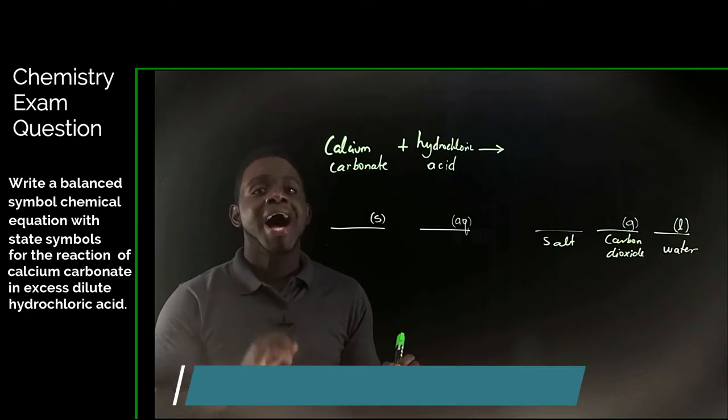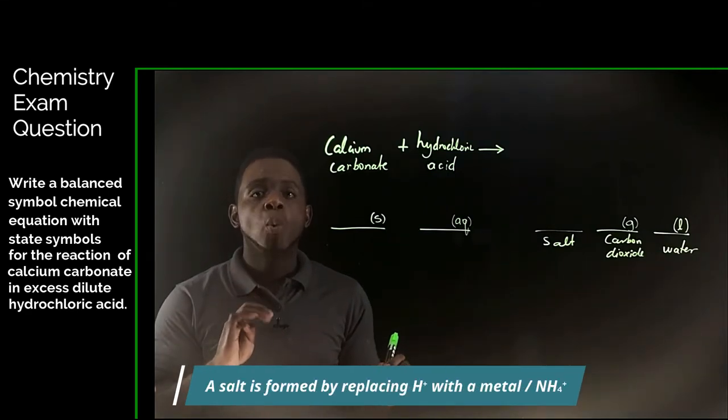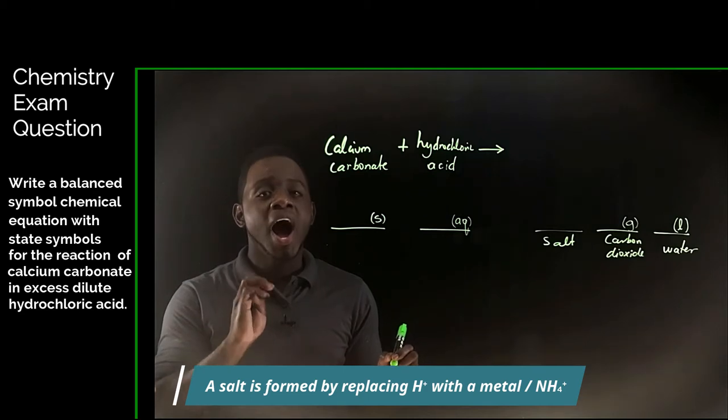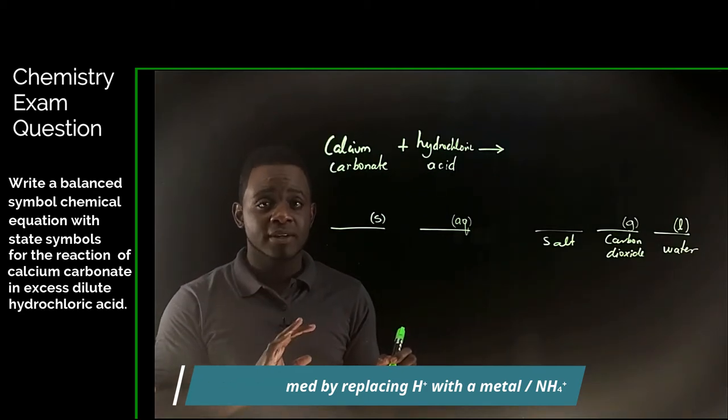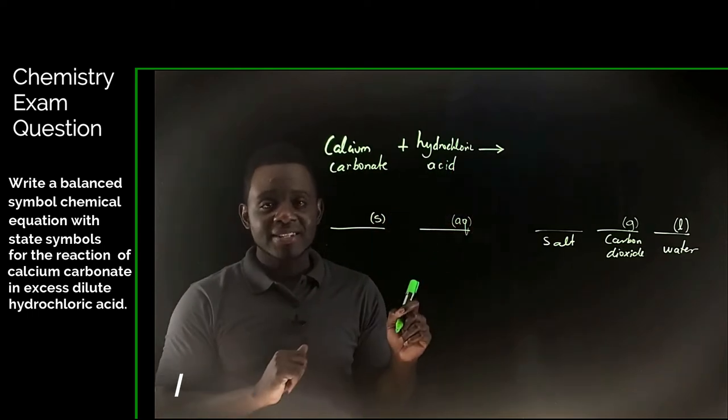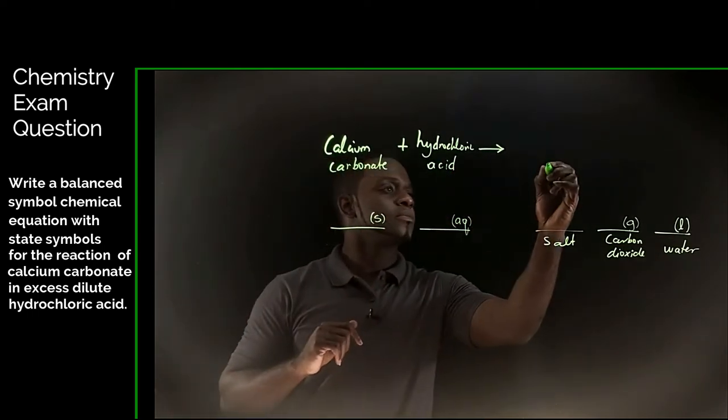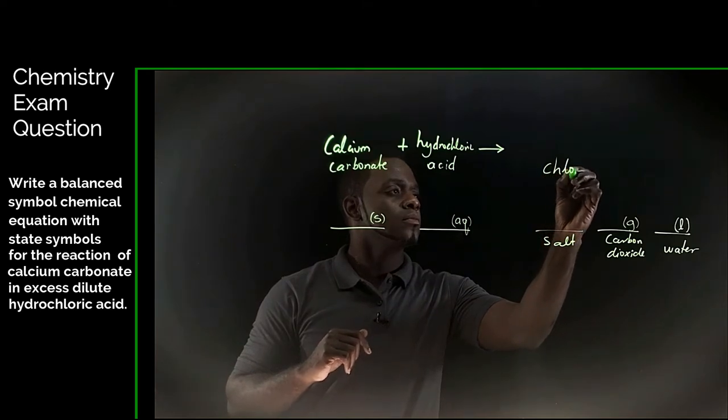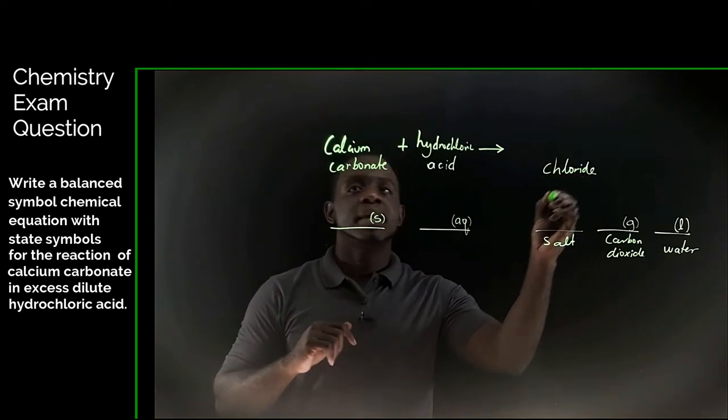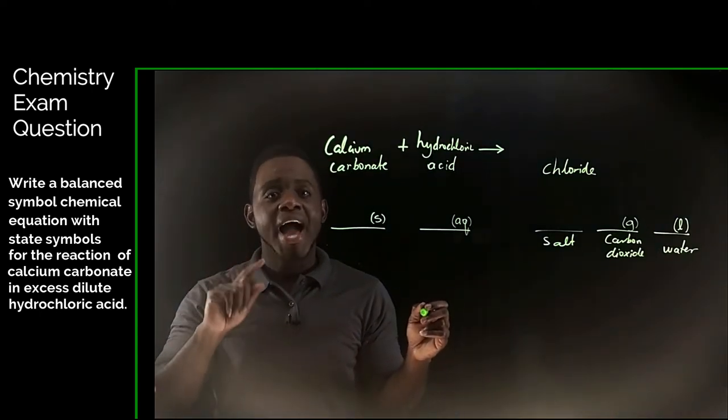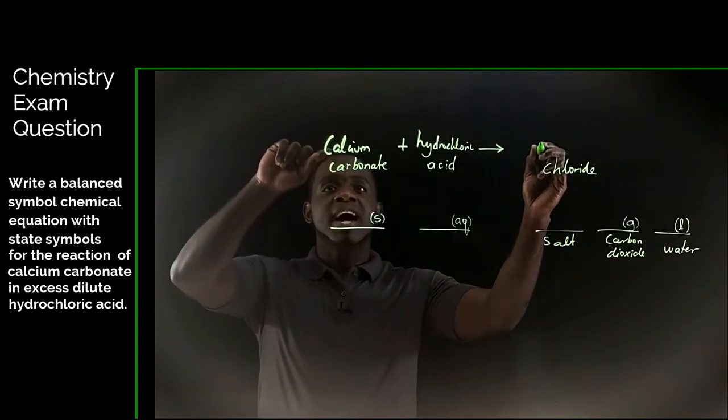And now for the salt. A salt is formed when the replaceable hydrogen ions in an acid are replaced by a metal or the ammonium ion. Hydrochloric acid will produce salts known as chlorides. And the metal replacing the hydrogen from hydrochloric acid is calcium.